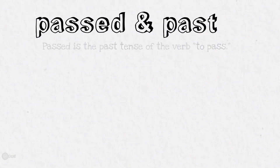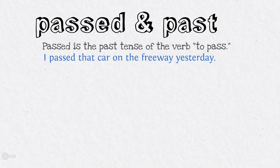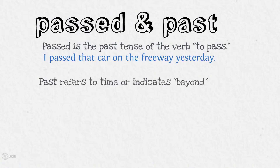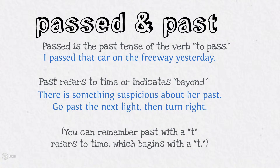Past and passed. Passed is the past tense of the verb 'to pass': 'I passed that car on the freeway yesterday.' Past refers to a time or indicates 'beyond': 'There is something suspicious about our past,' or 'Go past the next light then turn right.' You can remember that 'past' with a T refers to time, which also begins with a T.